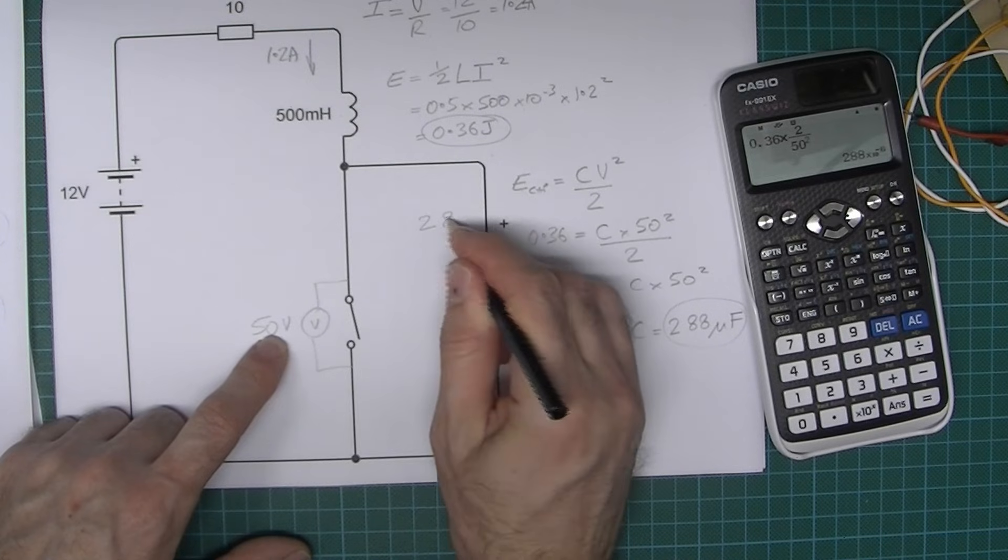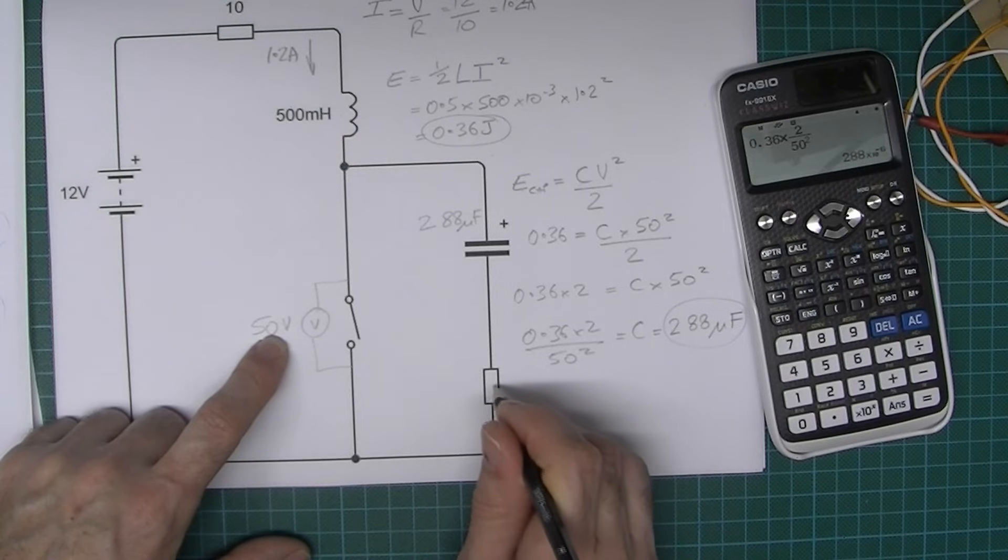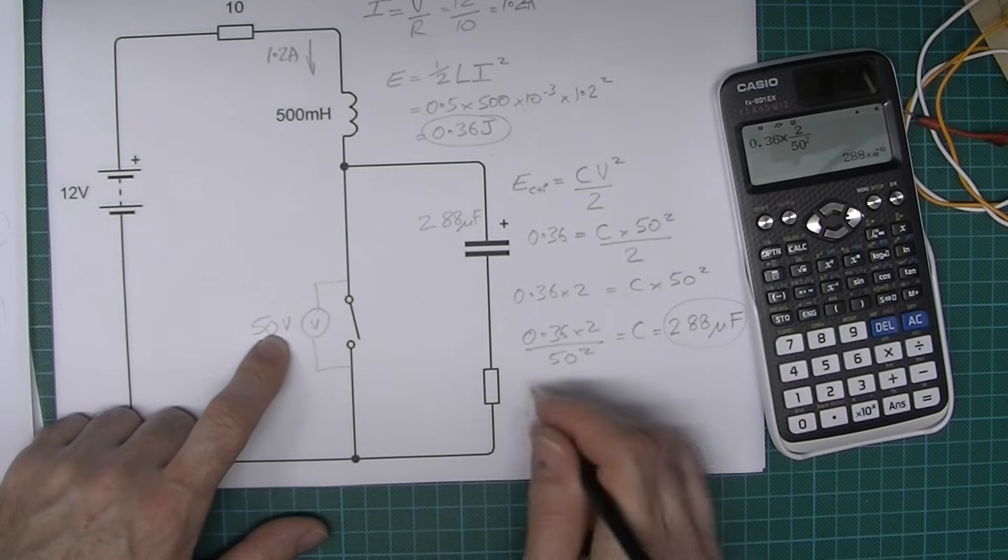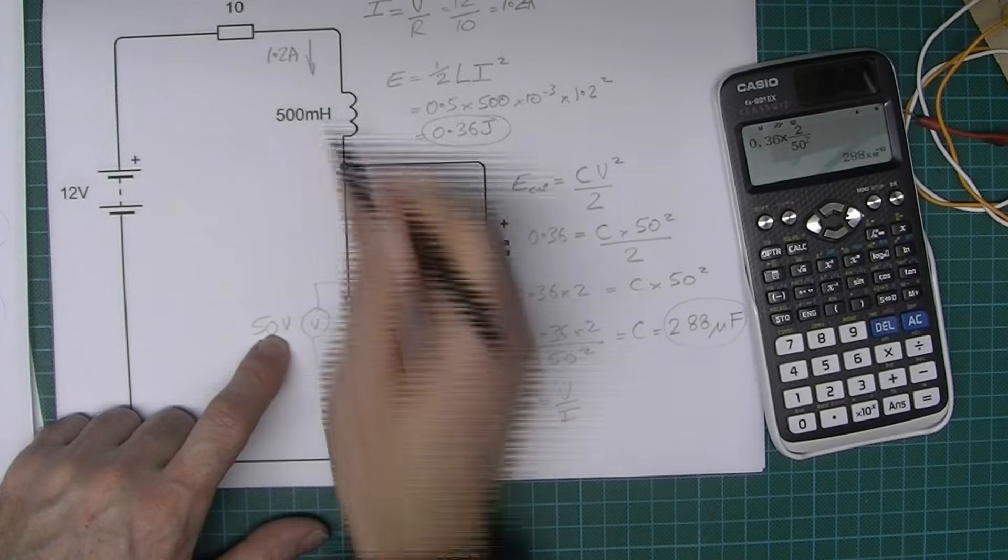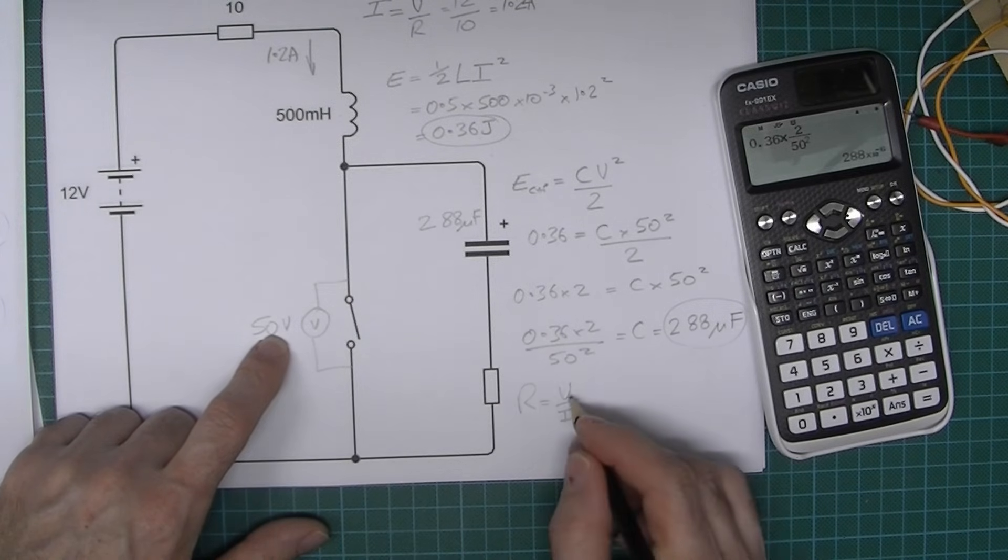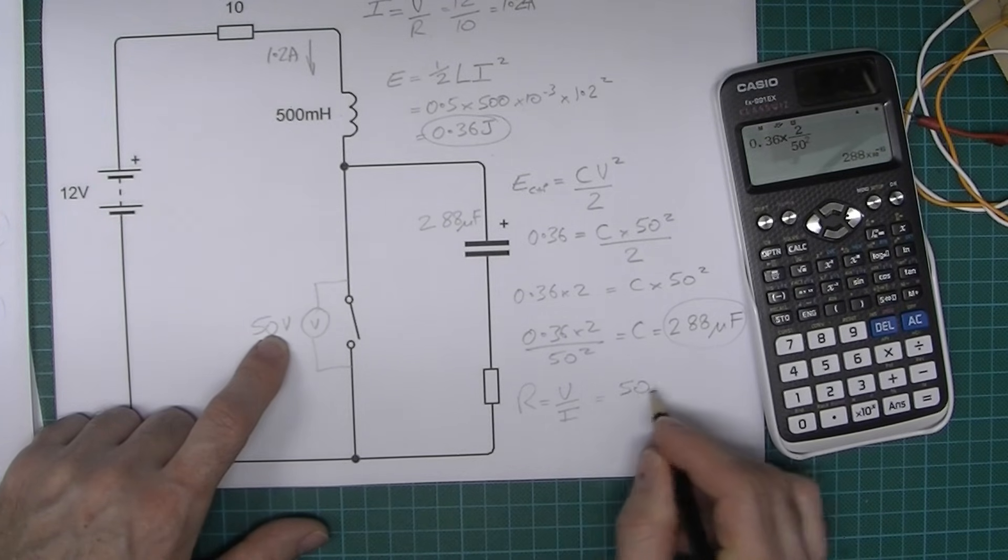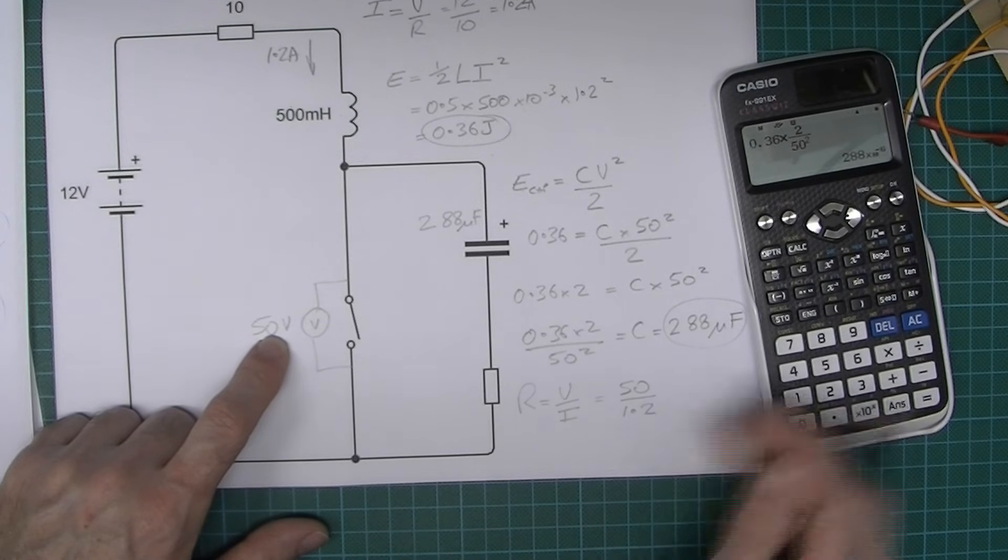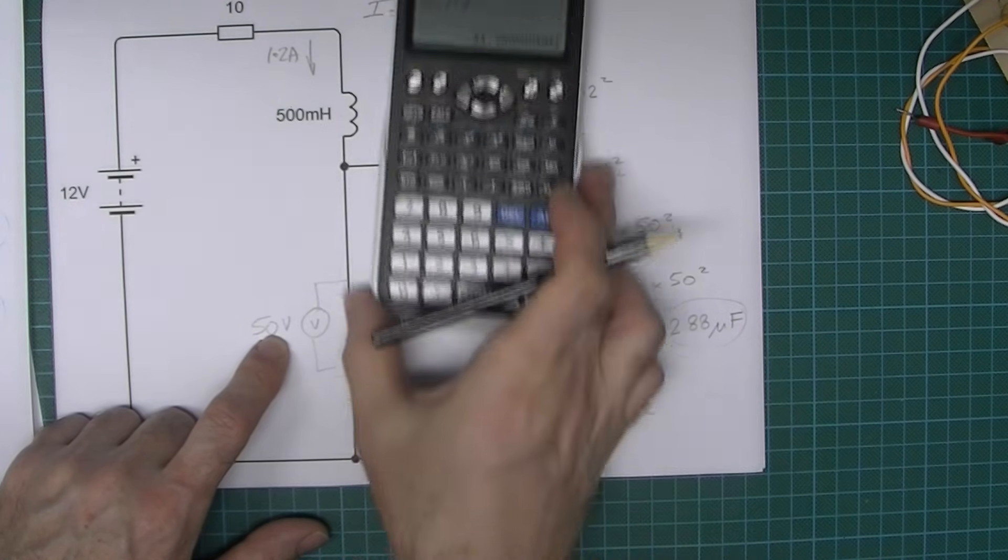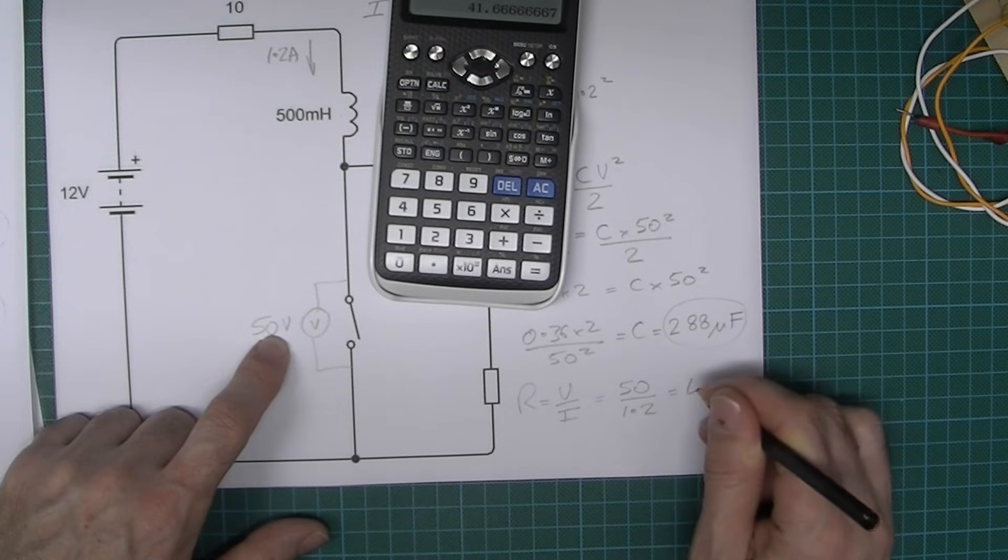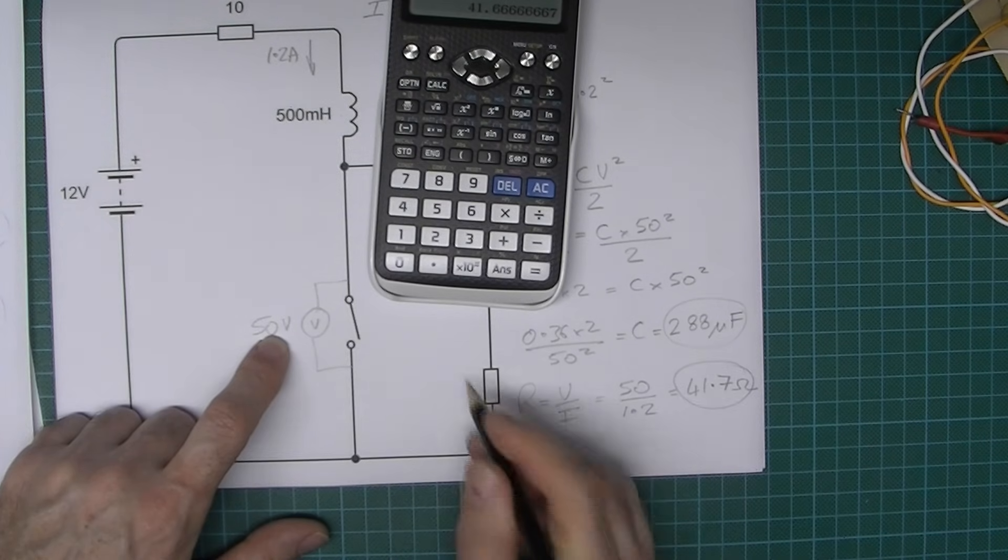Last but not least, I want to calculate this resistor here. We can use Ohm's law for that, so the resistance is going to equal the voltage over the current. We know the current which is 1.2 amps, we know the voltage which is 50 volts. So 50 divided by 1.2 equals 41.7 ohms.